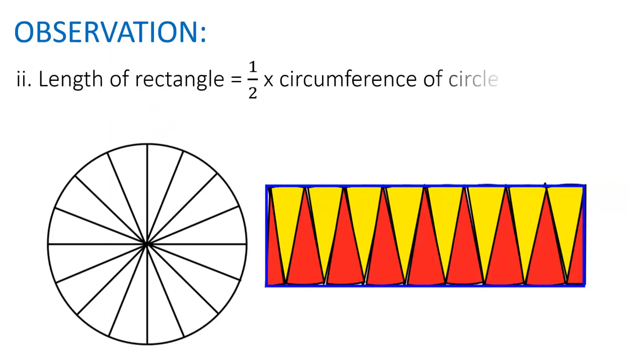Second, length of rectangle is equal to half of circumference of circle, which is equal to half into 2πr, which is nothing but πr.